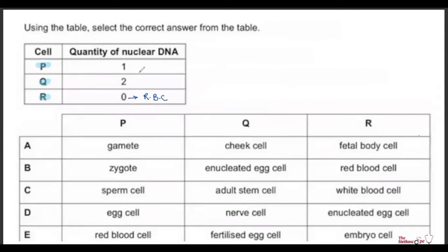For R, we have option B stating it is a red blood cell, or option D stating R is an enucleated egg cell — as in cloning like Dolly the sheep, where the nucleus is removed from the egg. So there's an artificial way of having a cell with no nuclear DNA, meaning either option could apply to R.